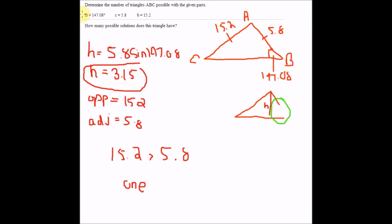That means there is one solution. In example problems you have to go through using sine, finding angles, and adding or subtracting from 180 to see if they're greater, but this method is so much faster and gives us our answer directly. There is only one solution because the opposite side is larger than the adjacent side.